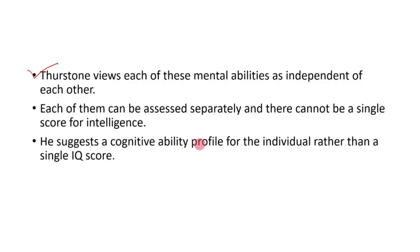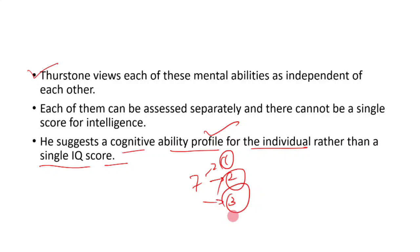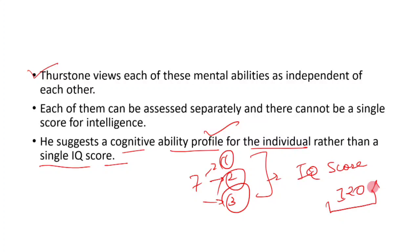Each ability can be measured separately to make a single score for intelligence. Thurston suggests a cognitive ability profile for individuals rather than a single IQ score. You can make a different cognitive ability profile for each person — not just a single IQ score. Every human has some quality; every human is exceptional.